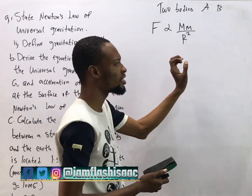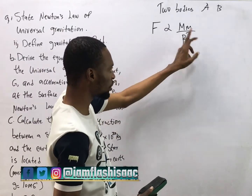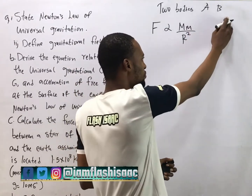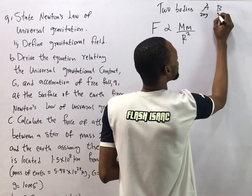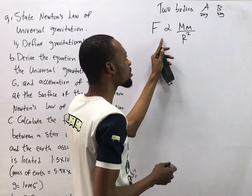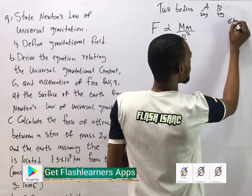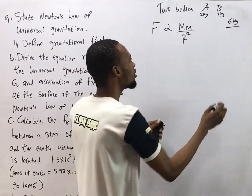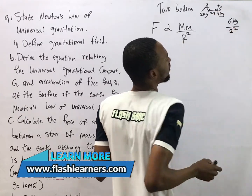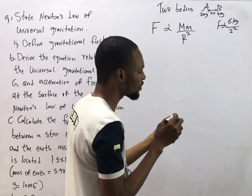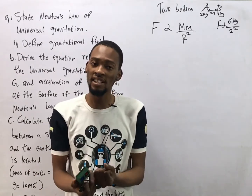So this implies that once you have any two bodies in the universe, the force of attraction between them is directly proportional to the product of their masses. Say body A has mass 2 kg and body B has mass 3 kg — the force is proportional to m1 × m2, which is 2 × 3 = 6 kg, and inversely proportional to the square of their distance. If the distance is 2 m, the force is proportional to 6 over 2 squared.